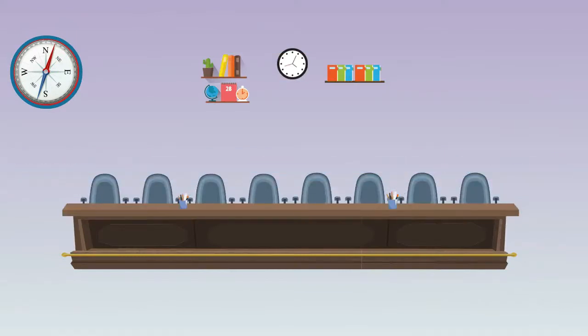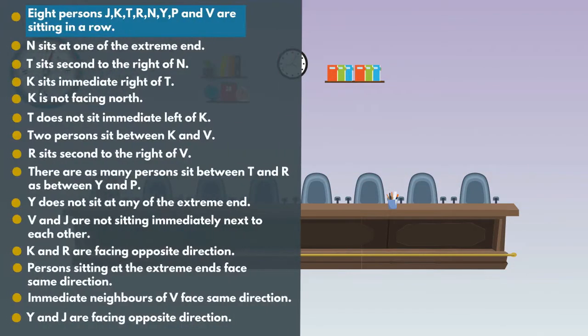Let's draw the diagram based on the information. 8 persons J, K, T, R, N, Y, P and V are sitting in a row.